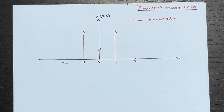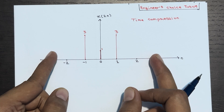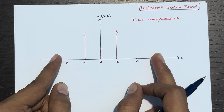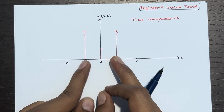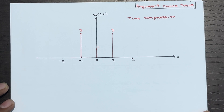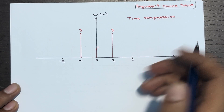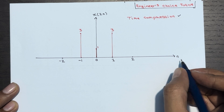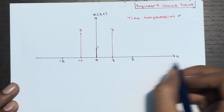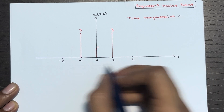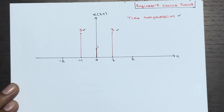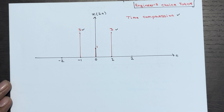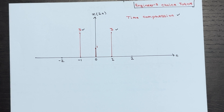If you plot the graph for this, you can see the signal is compressed. Earlier the signal was defined over a wider range of time instants, now it is compressed. The value is defined at n=0 which is 1, n=1 which is 3, and n=-1 which is 3. This is what time compression looks like.